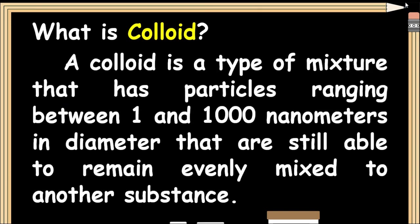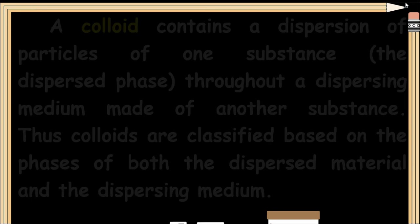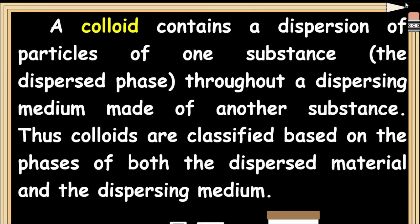A colloid is a type of mixture that has particles ranging between 1 and 1,000 nanometers in diameter that are still able to remain evenly mixed with another substance. A colloid contains a dispersion of particles of one substance — the dispersed phase — throughout a dispersing medium made of another substance. Thus, colloids are classified based on the phases of both the dispersed materials and the dispersing medium.